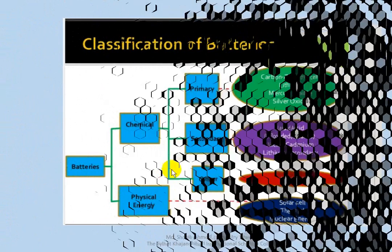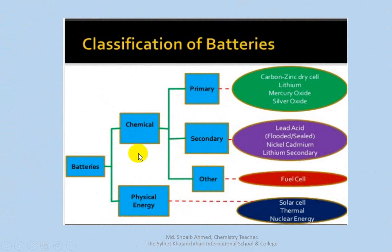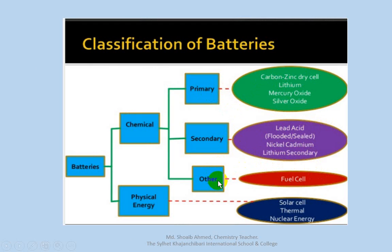There are two types of batteries. Chemical batteries include primary and secondary types — examples are fuel cells, secondary batteries, lead-acid batteries, lithium-ion batteries, and dry cells. Physical energy sources include solar energy, thermal energy, and nuclear energy.